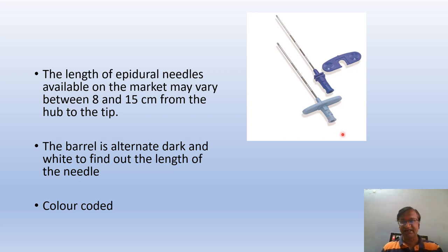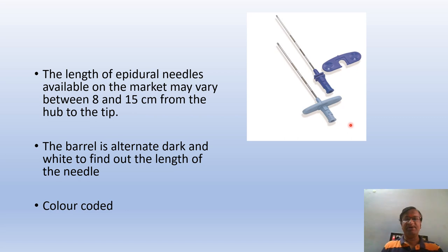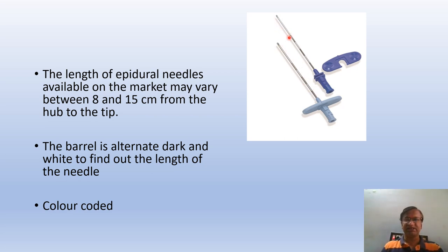This is the hub of the needle, and this is the stilette. The stilette also has its own hub. This is the winged needle. The barrel is alternately dark and white to indicate the length — it starts from 3 centimeters and goes 4, 5, 6, 7, 8, and 10.